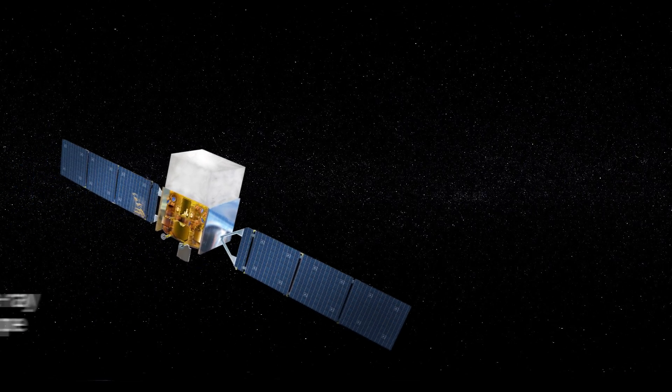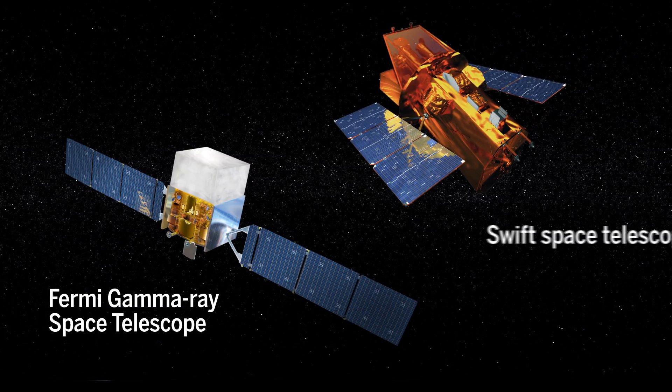Just two seconds later, a so-called gamma-ray burst was detected by NASA's orbiting Fermi gamma-ray space telescope and its Swift space telescope.